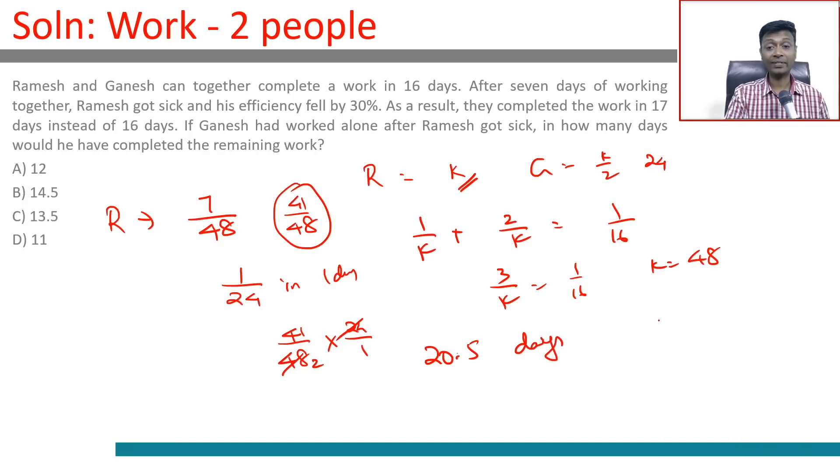If Ganesh had worked alone after Ramesh got sick, that means Ramesh has worked for 7 days, then disappears. 20.5 is when Ganesh would have finished it, minus 7 equals 13.5 days.